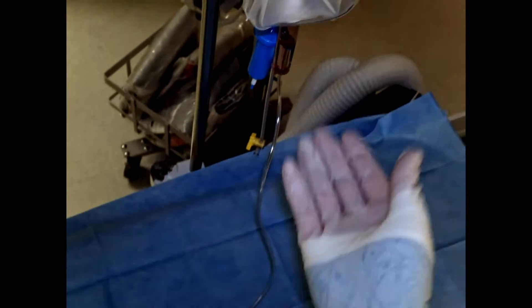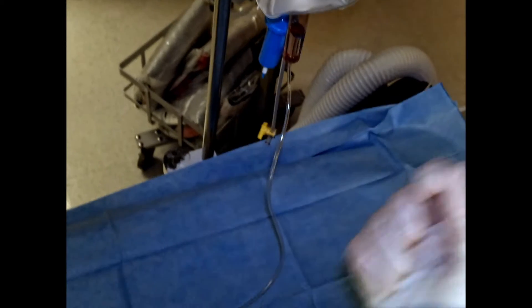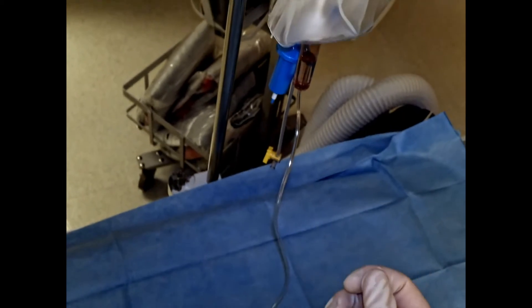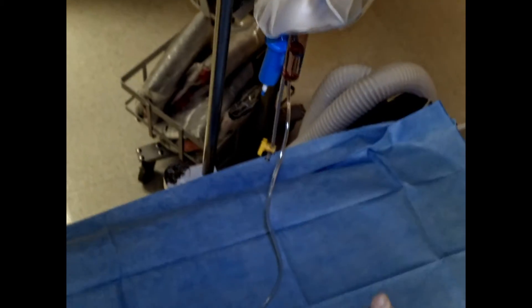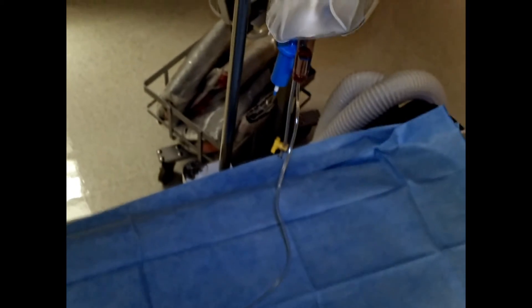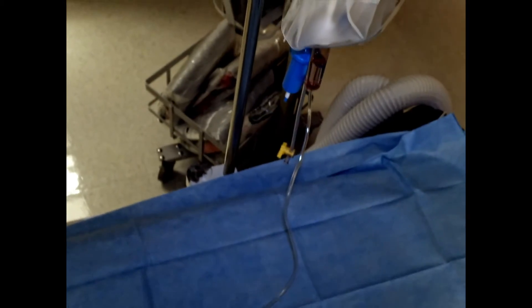If the drip chamber is too high or too low, you're either going to suck air into the system or you're not going to be able to see what your rate is. So you want to make sure that's taken care of.